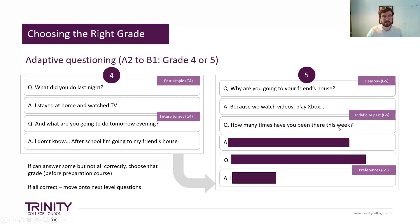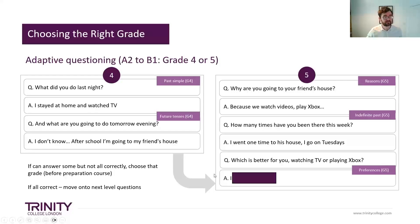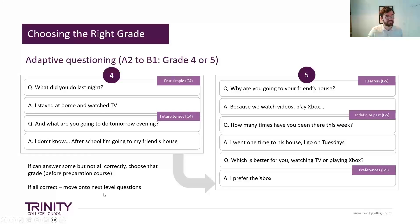Preferences come in at grade five as well. You might ask: 'Do you prefer Xbox or PlayStation?' or 'Which is better for you, watching TV or playing Xbox?' The candidate says: 'I prefer Xbox.' So this candidate is fine for grade five — probably it's too easy, so it's time to keep testing them. Maybe put them into grade six. As it says, if all are correct, move on to the next level questions.